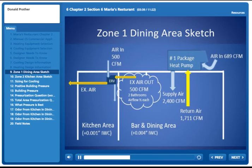It's exhausting 500 CFM, and the difference between the exhausted air and the air being brought in is about 189 CFM, about 8% of the total air. That extra 189 CFM is used to pressurize the bar and dining area, and our target is about .004 inches of water column.